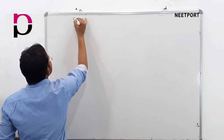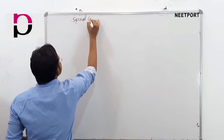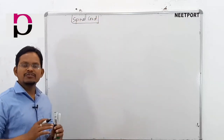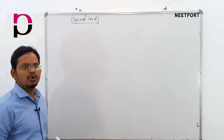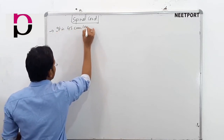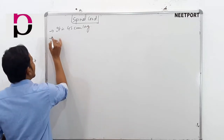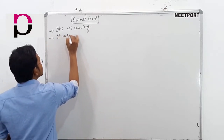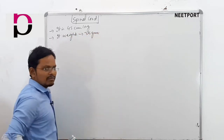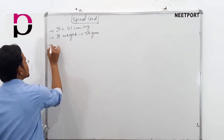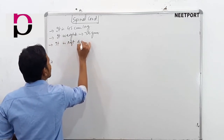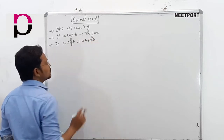Spinal cord is a long structure which is about 45 cm long. It weighs approximately 35 grams. It is soft and whitish in color.